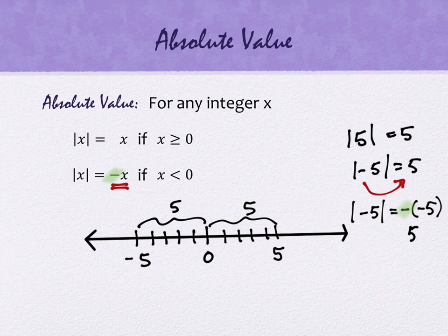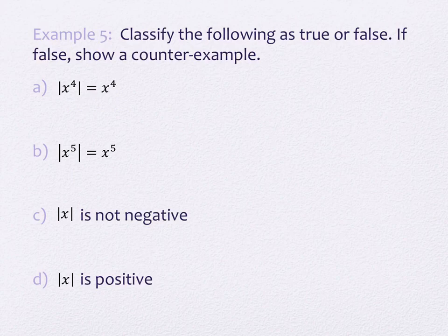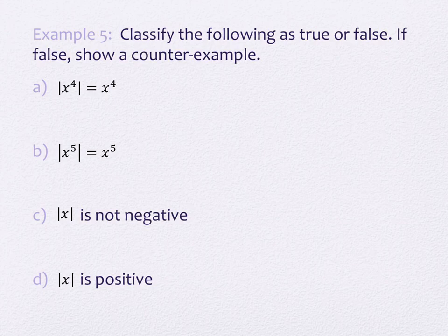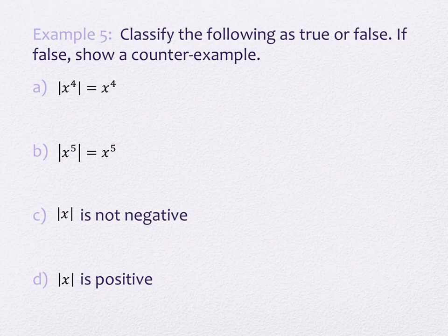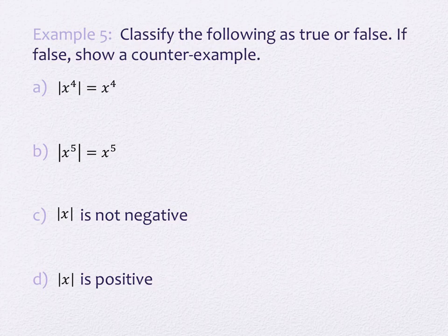Let's take a look at a few problems dealing with absolute values. We're supposed to classify whether these statements are true or false, and if they're false we show a counterexample. When dealing with absolute values, we usually consider three cases: values that are positive, values that are negative, and zero. Those are your three categories because absolute values affect things differently for positives versus negatives, and zero sometimes shows up in a funny way.